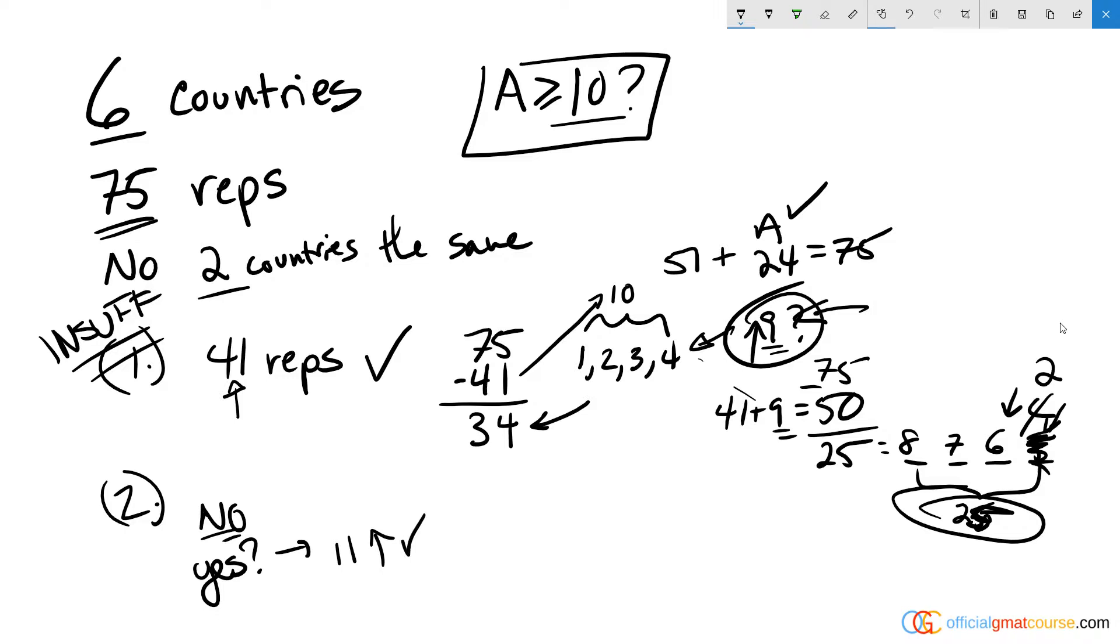which means that yes, I can send more than 10 or less than 10 based on the rule in statement two, which was that A sends fewer than 12, meaning at most 11. So this is also insufficient.